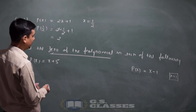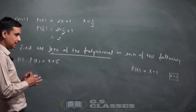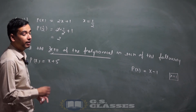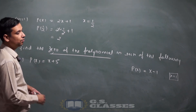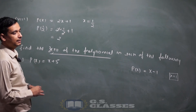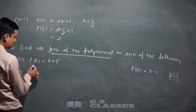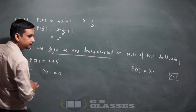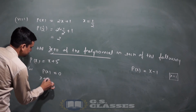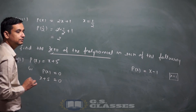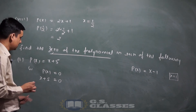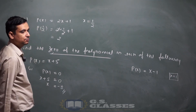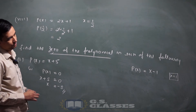Zero निकालने का तरीका: p(x) = x plus 5 के लिए — let p(x) = 0। x plus 5 = 0 → x = minus 5। तो x = minus 5 इस polynomial का zero है। इसी तरह p(x) = x minus 5: x minus 5 = 0 → x = 5।